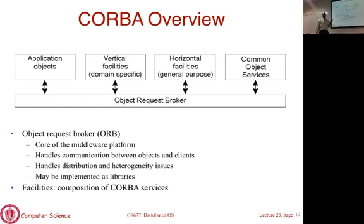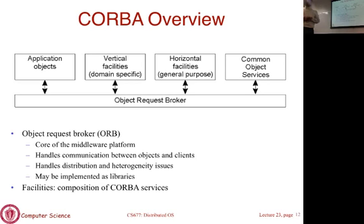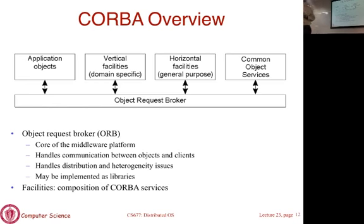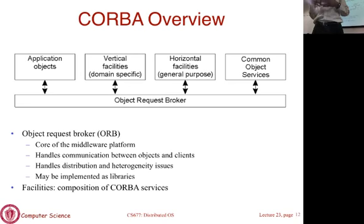Now let's talk a little about CORBA — there are some similarities and differences with EJB. CORBA is another middleware framework that predated EJBs; it's about 10-20 years old. At the heart of it is what's called an Object Request Broker, or ORB — that's why the name CORBA: Common Object Request Broker Architecture. The ORB is the core of the middleware platform that enables objects to talk to one another.